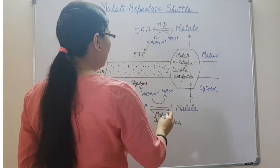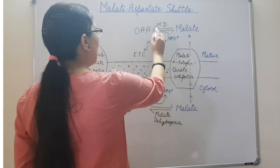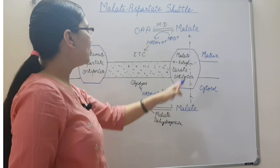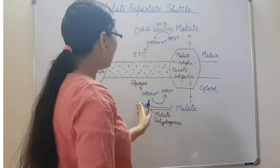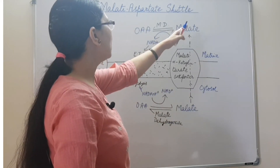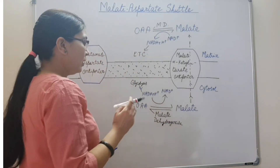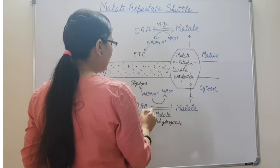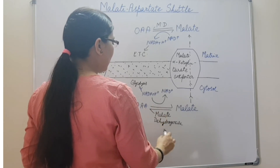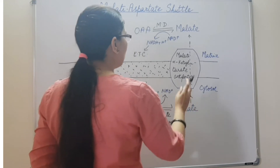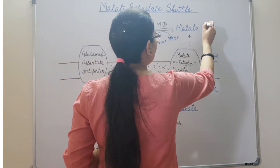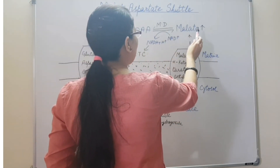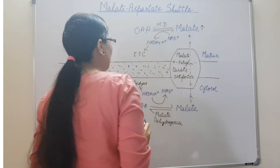Here we see that cytosolic malate dehydrogenase and mitochondrial malate dehydrogenase catalyze the reaction in opposite directions: in the cytosol from oxaloacetate to malate, and in the matrix from malate to oxaloacetate. This depends upon the concentration. In the cytosol, the concentration of oxaloacetate is high, so malate dehydrogenase catalyzes the reaction from oxaloacetate to malate. In the matrix, malate dehydrogenase catalyzes the reaction from malate to oxaloacetate.